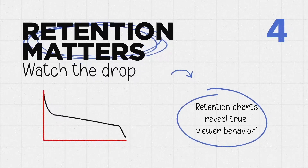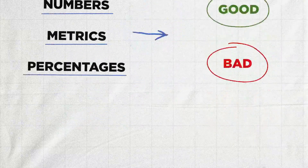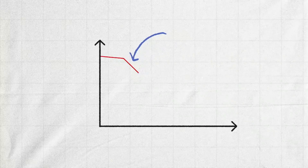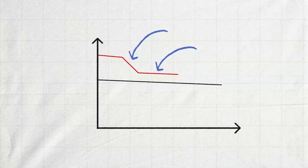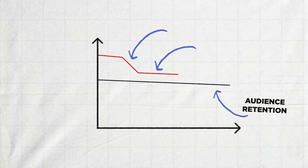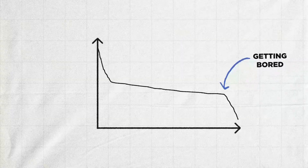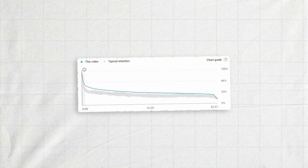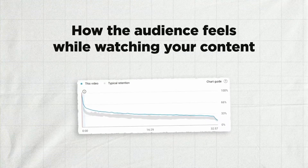The fourth tip: do not undervalue the retention charts. Retention charts are one of the most valuable pieces of information in your YouTube analytics. If the chart goes down, people are tuning out — something is bad. If the chart stays flat, people stay interested. If it gradually goes down, people are slowly getting bored and you might need to add more exciting moments. The retention chart gives you the most accurate representation of how the audience feels while watching your content.